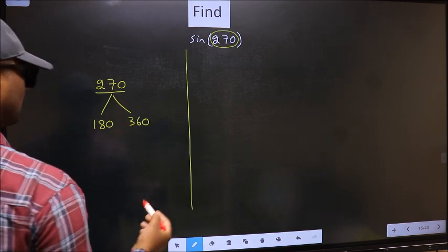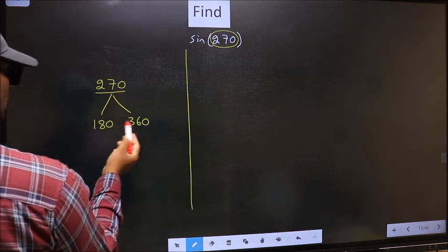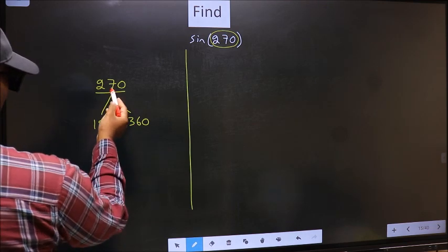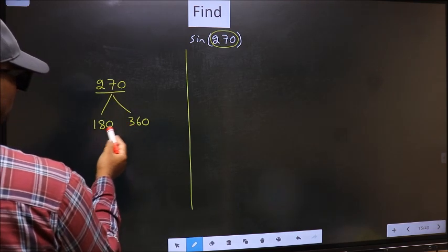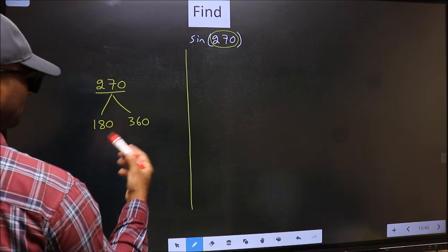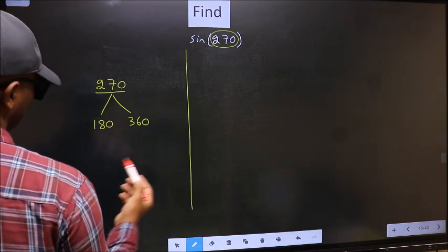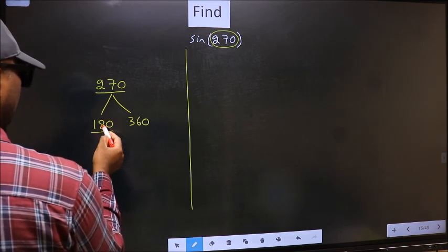Next. Now 270 is close to which number? It is equally close to both of them. So you take any one number. Let us say I select 180.